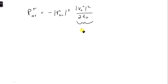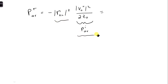Now we can recognize this as just being the incident time average power, and so we can just plug in — we know this, and we know this from part D — and so we wind up here with 1.16 microwatts.